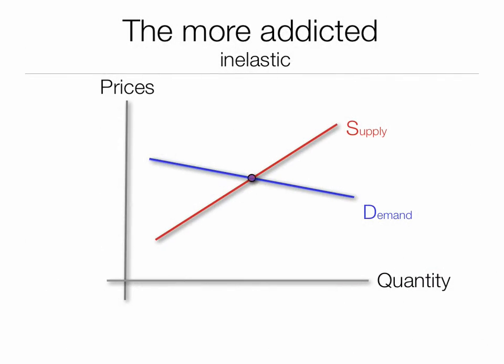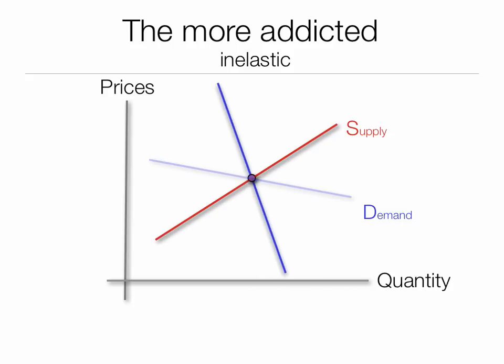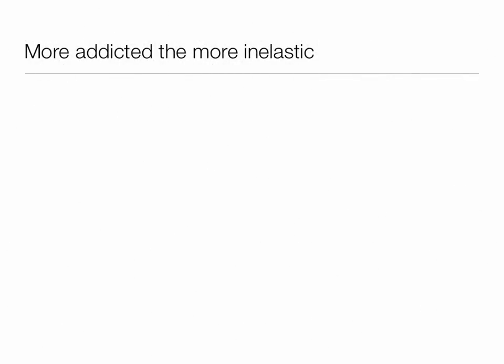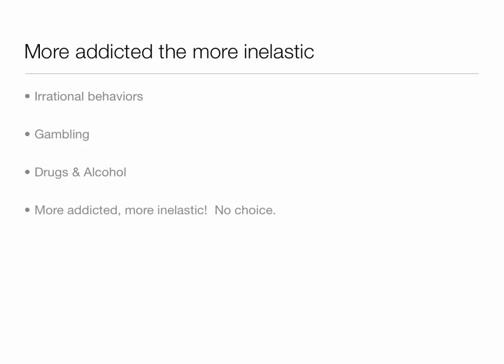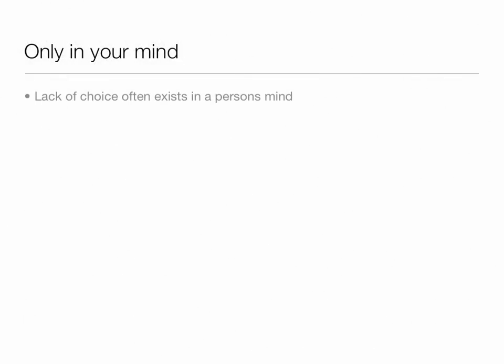We can also talk about how drug addiction impacts demand. Drug addicts have a very inelastic demand curve — they're addicted and have no choice but to take the drugs. The more addicted, the more inelastic. This causes them to exhibit irrational behaviors — gambling, drugs and alcohol. The more addicted, the more inelastic, no choice, no options. Sometimes this addiction can only be in your mind, but the lack of choice often exists in a person's mind and is still very real.